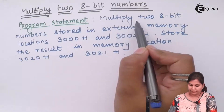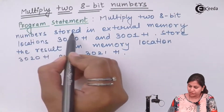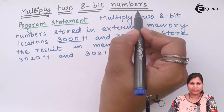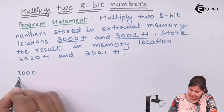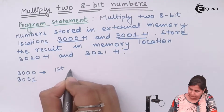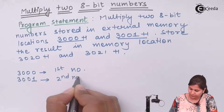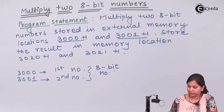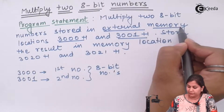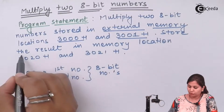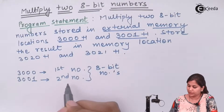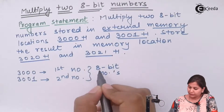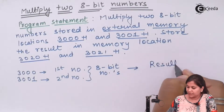We have to write a program to multiply two 8-bit numbers which are stored in external memory locations 3000H and 3001H. The first number is at 3000H and the second number is at 3001H. These numbers are stored in external memory. After multiplication, we have to store the result in memory locations 3020H and 3021H.